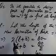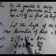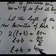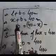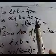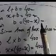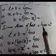Let the length of the rectangular park be x meters. The perimeter of the park is 80 meters. For a rectangle, perimeter equals 2 times (length plus breadth), so 2(x plus breadth) equals 80, giving length plus breadth equals 40. Therefore breadth equals 40 minus x meters. The area of the rectangular park is 400 meters square, and area equals length multiplied by breadth.